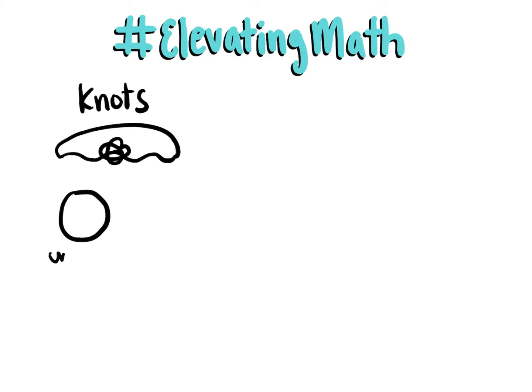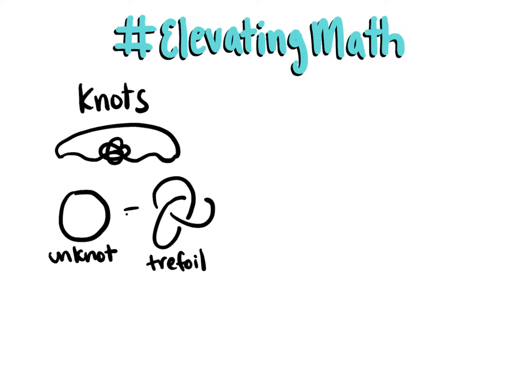The two simplest kinds of knots are the unknot, which has no crossings in its simplest form, and the trefoil, which has three crossings in its simplest form. These knots are not the same, because we cannot morph one into the other without cutting open our string.